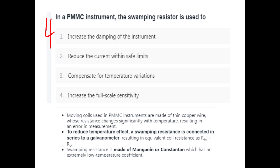The question is: In a PMMC Instrument, a Swamping Resistor is used. What is a Swamping Resistor? It is mainly used to compensate for Temperature Variations. The Moving Coil of a PMMC instrument is wound with thin copper wire whose resistance changes significantly with temperature, resulting in error in measurement. The temperature effect is reduced by connecting a Swamping Resistance in series with the galvanometer. Swamping Resistance is made up of Manganin, which has an extremely low temperature coefficient.